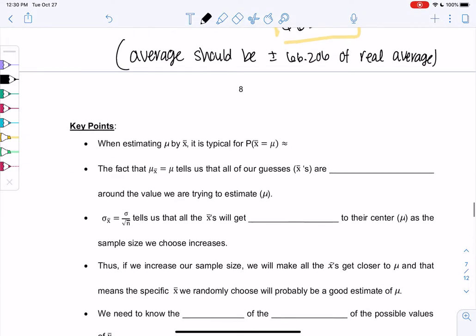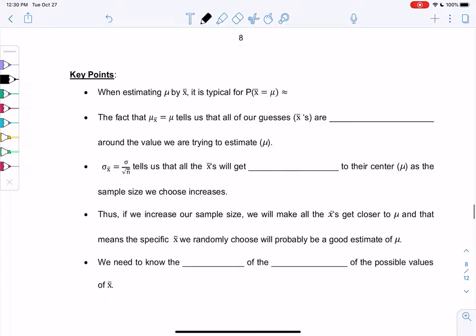So let's just do a few key points. And we'll end the video. So just like proportions, if we estimate mu by x bar, for us to get the exact value, the probability that x bar equals x exactly the same average is about 0. The whole idea of chapter 7 is that, and statistics overall, is that we're not going to get the exact value, but we will be close. The fact that mu of x bar equals mu, so the average of the sample means equals the average, tells us that all of our guesses are centered around the average, are centered around mu, this thing we're trying to estimate.